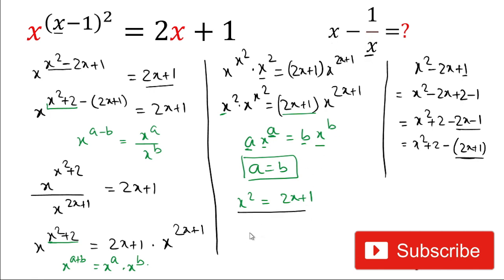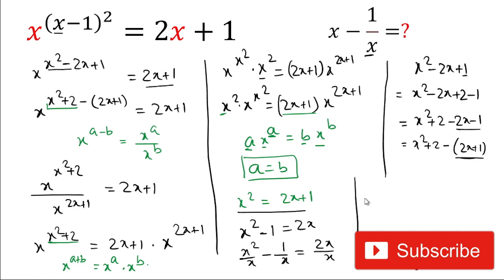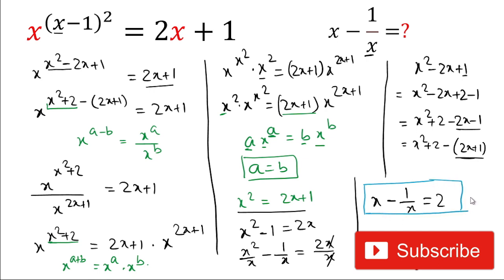To get the expression in the form (x-1)/x, we rearrange x² = 2x+1: move -1 to the left to get x²-1 = 2x. Dividing both sides by x gives x²/x - 1/x = 2, which simplifies to x - 1/x = 2. So the value of (x-1)/x equals 2, which is our answer.